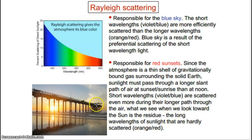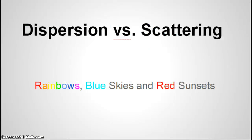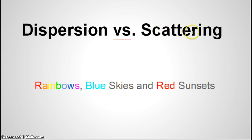We've been able to take a look at why we have rainbows from dispersion, or refraction, through water droplets, and we're looking at blue skies and red sunsets and sunrises due to scattering, which is the concept of reflection of light. And that concludes dispersion and scattering.